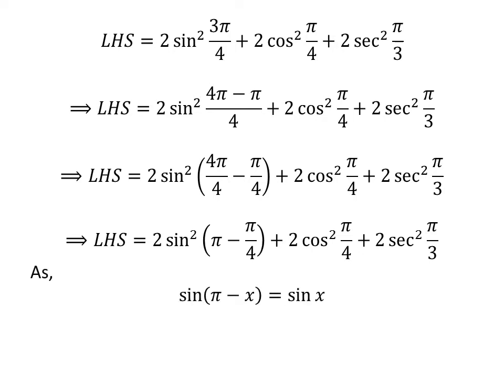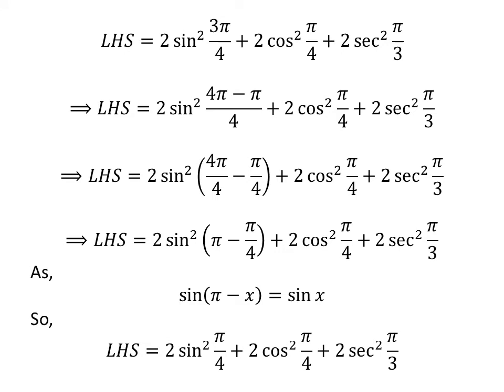As we know, sine of pi minus x is equal to sine of x. The proof of this trigonometric identity is given in the video appearing in the upper right corner, and the link is also given in the description. Applying this identity, the left hand side becomes 2 times square of sine of pi upon 4 plus 2 times square of cosine of pi upon 4 plus 2 times square of secant of pi upon 3.